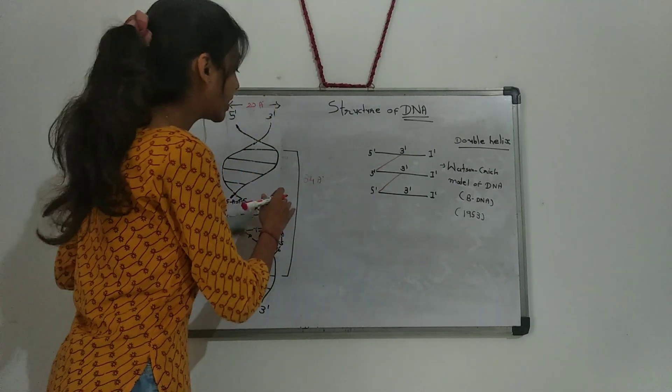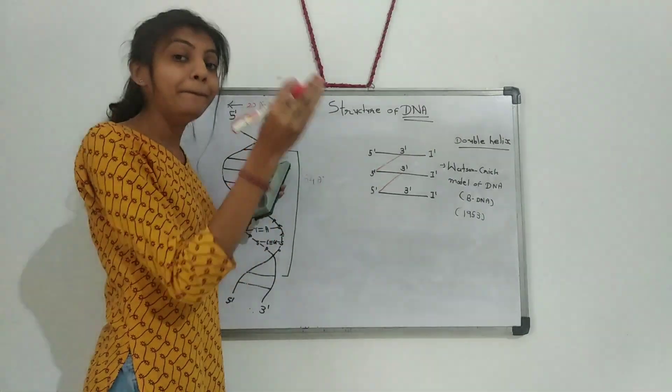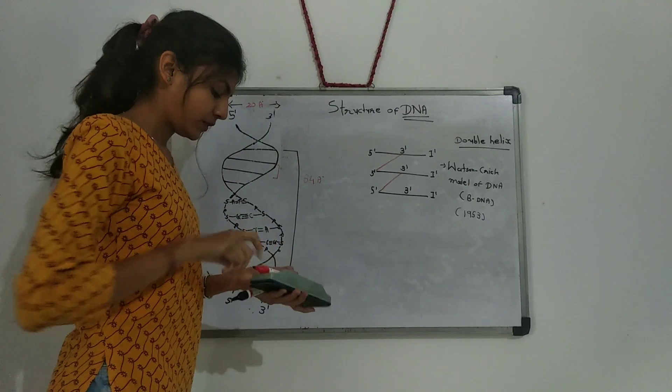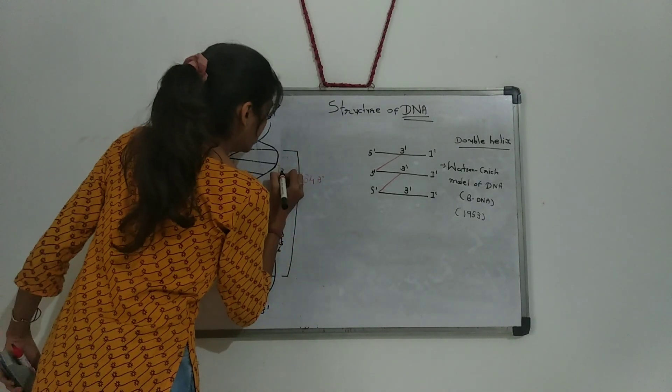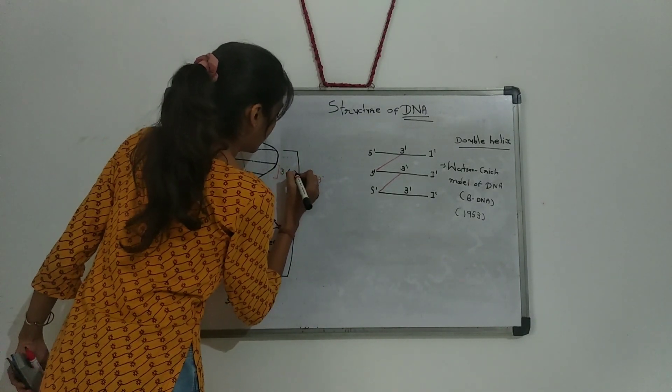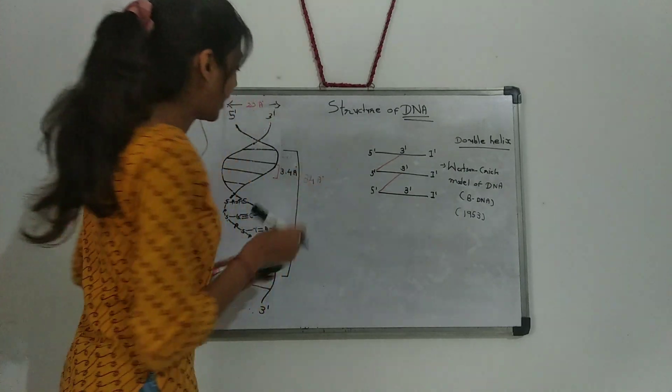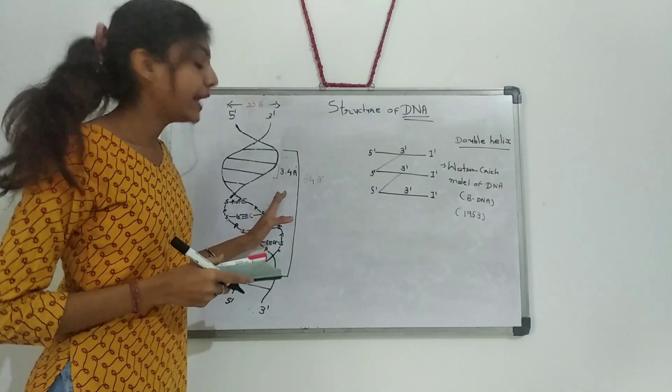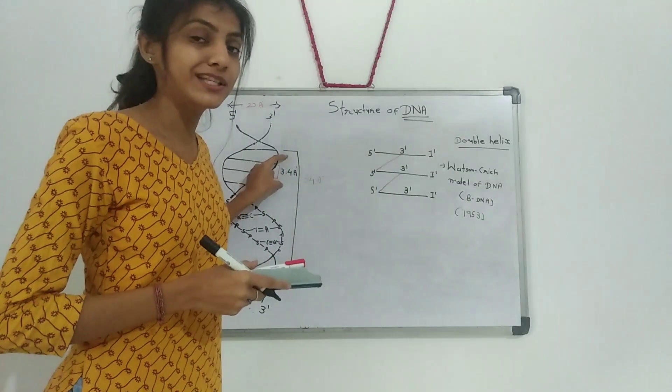That contains 10 nucleotide pairs. The distance between two pairs is 3.4 angstrom. The helix has 10 nucleotide pairs which is 3.4 angstrom distance.